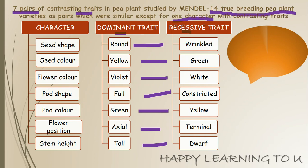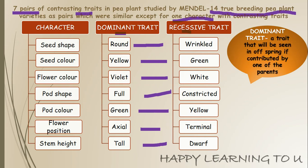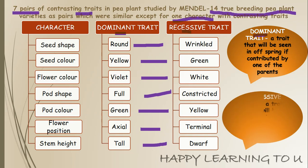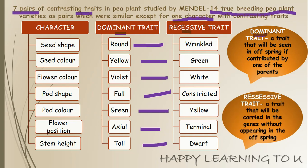What is a dominant trait? A dominant trait is a character which will be seen in the offspring if contributed by one of the parents — it dominates the other trait, and therefore it is known as dominant, as the word suggests. A recessive trait is the character which is carried in the genes without appearing in the offspring. These recessive traits are present in the genes but they are not expressed.